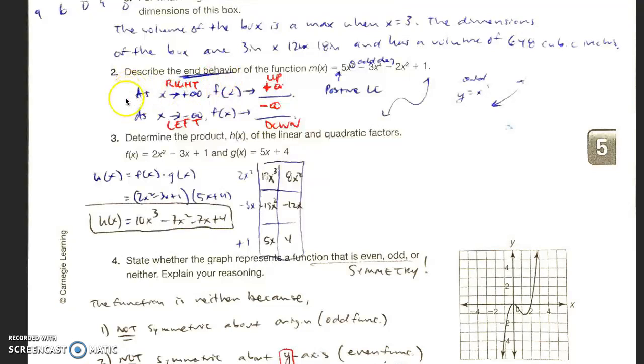Remember for the end behavior you should have the sentence frame here in blue. As x approaches positive infinity, meaning you're going towards the right, you'll notice that the arrow is going towards up. That's f of x is approaching positive infinity. And as x approaches negative infinity, so you're going to the left, f of x, the y value is negative infinity, which is going down.